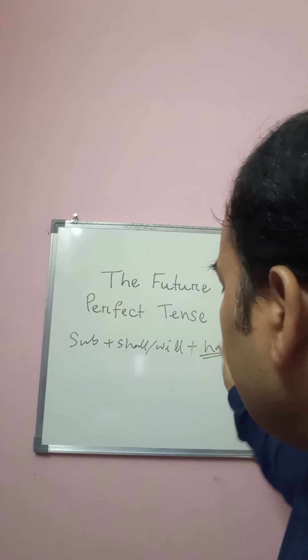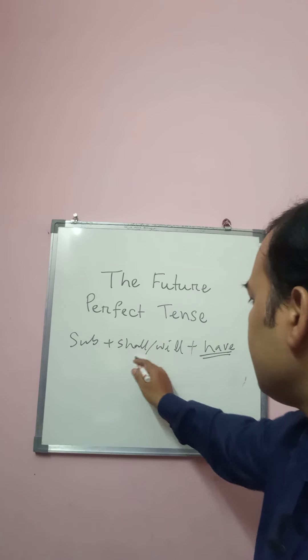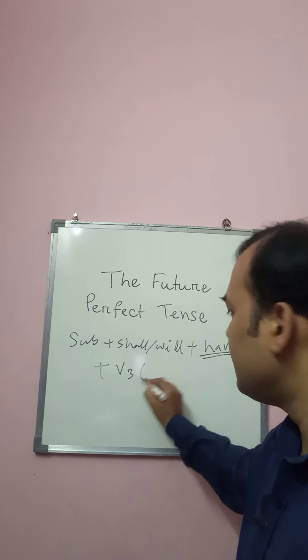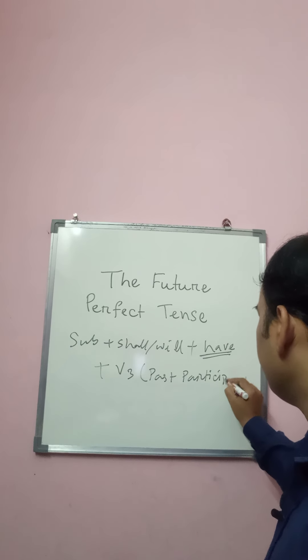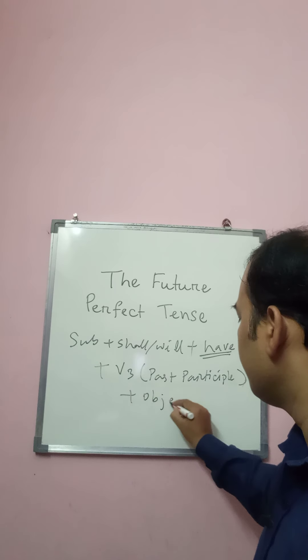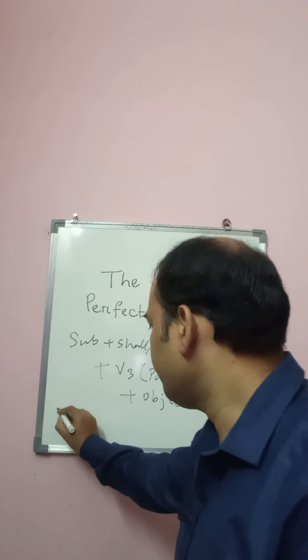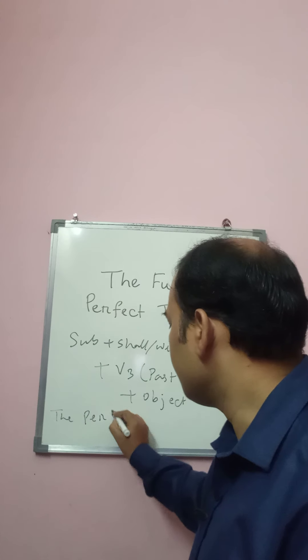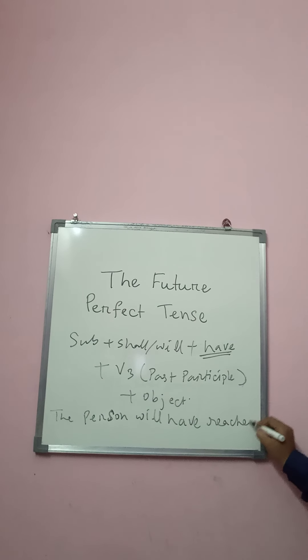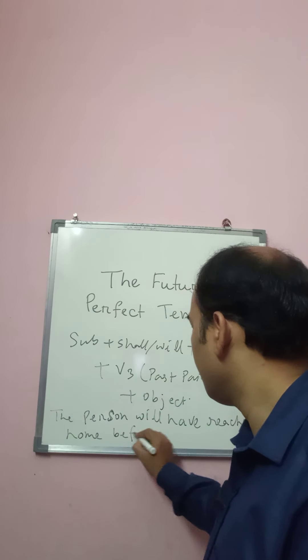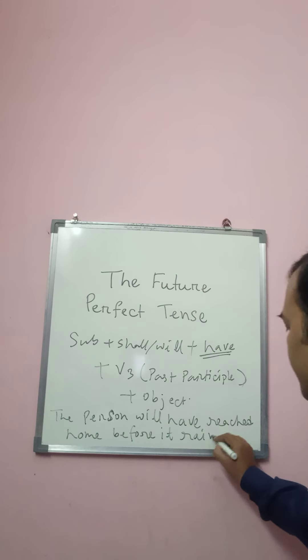We have to keep in mind that we do not use 'has' or 'had' here — only 'have' is used with shall or will. The full structure is: Subject + shall/will + have + V3 (third form / past participle) + object. For example: 'The person will have reached home before it rains.' In this tense we get two tenses: one future perfect and another simple present.